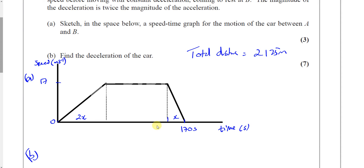The deceleration means the rate of change of speed. So if the rate of change of speed in the deceleration section is twice the rate in the acceleration section in terms of magnitude, then it takes less time to slow down. Let's call the deceleration time x and the acceleration time 2x, because it takes twice as long to accelerate. That means the constant speed section in the middle is 170 minus 3x.